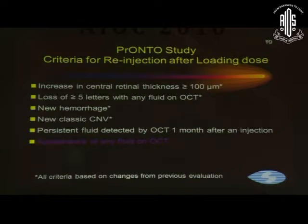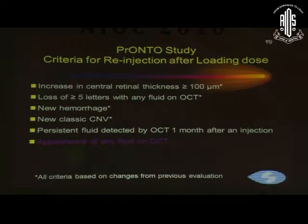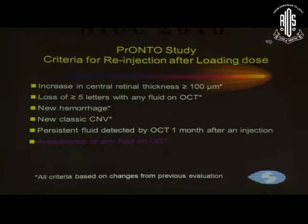What are the criteria for re-injection after the loading dose? According to the PRONTO study: an increase in central retinal thickness of more than 100 microns, loss of five or more letters with any fluid on OCT, new hemorrhage, new classic CNV, persistent fluid detected by OCT one month after injection, or the appearance of any fluid on OCT. Any of these would constitute criteria to treat.